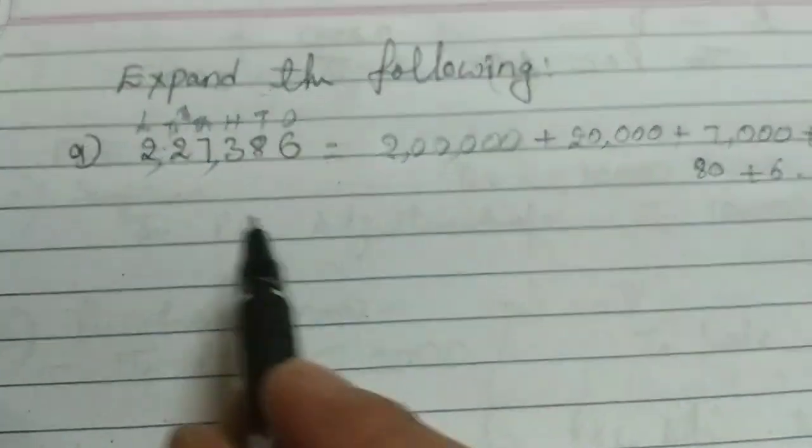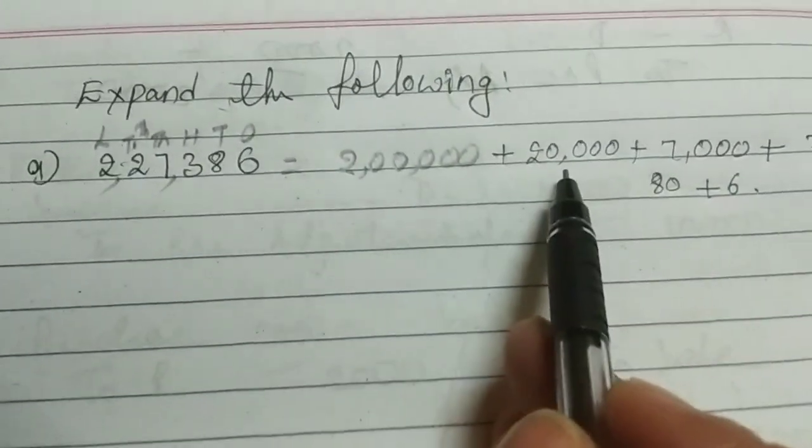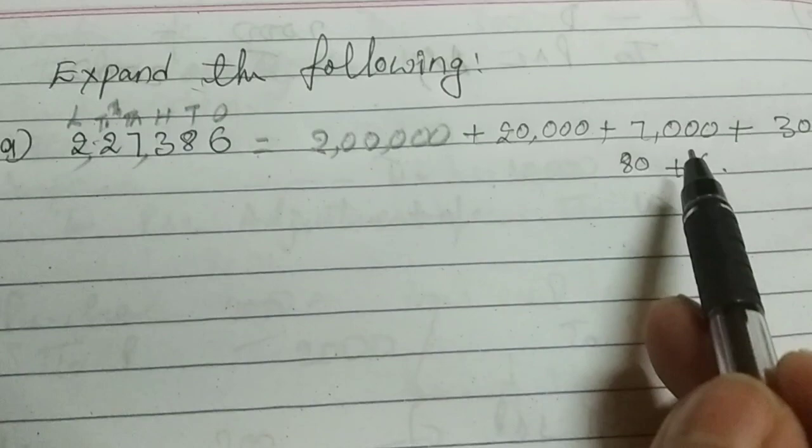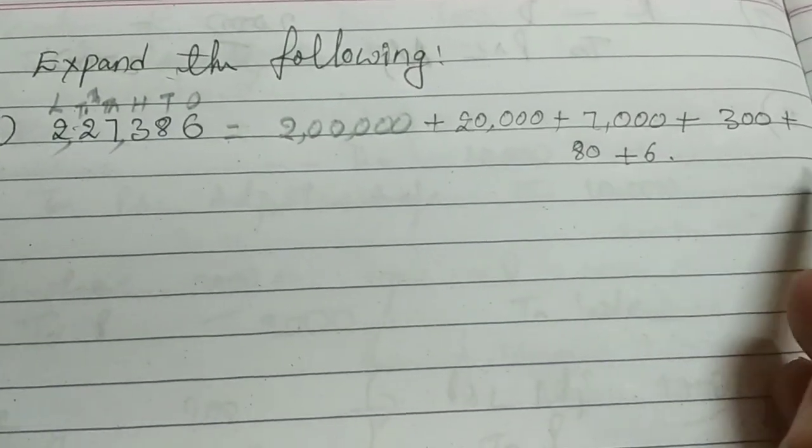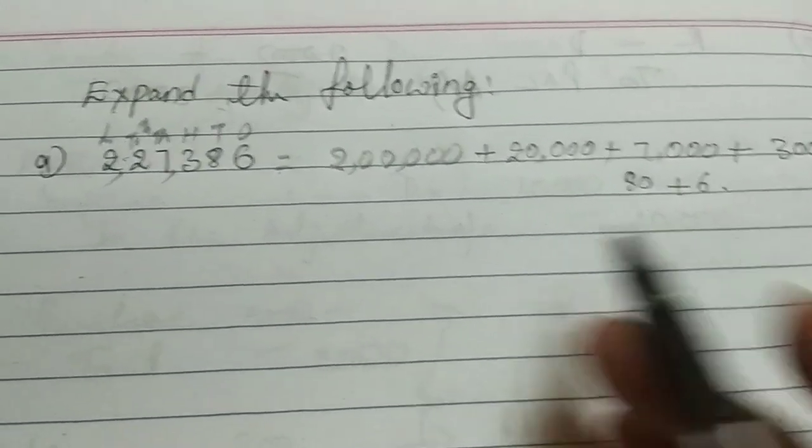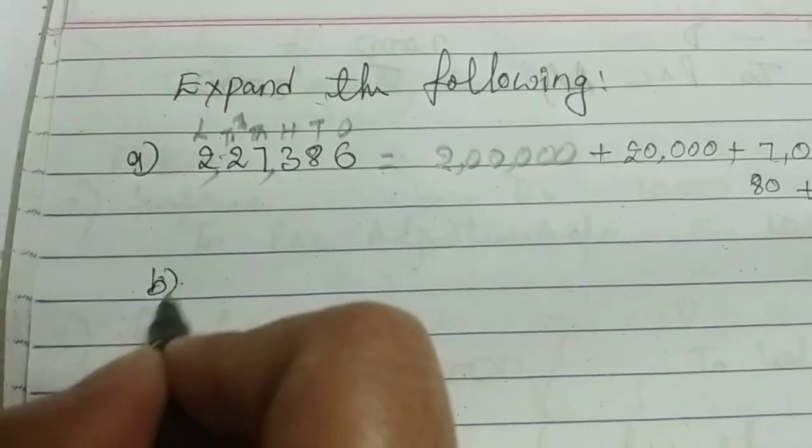Okay. 2 lakhs 20,000 plus 7,000 plus 300 plus 80 plus 6. The second one will solve.